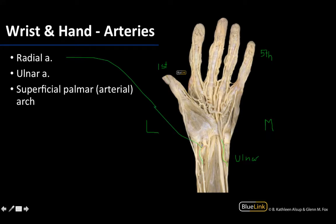You can even palpate particularly the radial artery about where it would be located on yourself — where it is entering the wrist before it dives towards the more dorsal side to get to the anatomical snuff box. That's a really nice place to palpate and feel that pulse point for the radial artery.